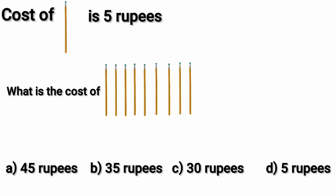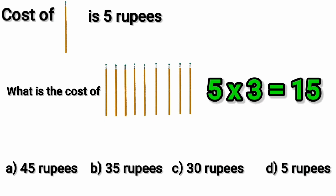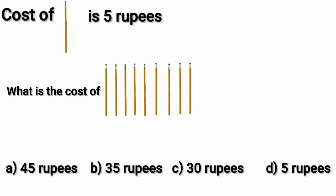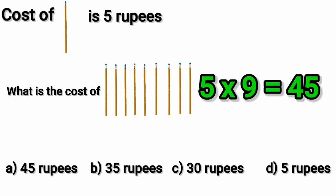Now find the cost of three pencils. Five threes are fifteen. Yes, cost of three pencils is fifteen rupees. So to find the cost of nine pencils we will have here five multiplied by nine. Yes, five nines are forty-five. So cost of nine pencils which are shown here is forty-five rupees. Now option a, forty-five, is the correct answer.